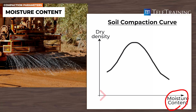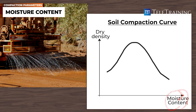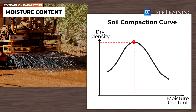As you move from left to right on the chart, the moisture content increases. The peak point of the compaction curve represents the maximum dry density, and the moisture content corresponding to it is known as the optimum moisture content.